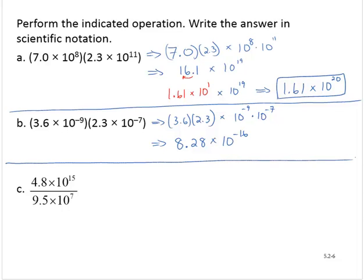In example C, we have 4.8 times 10 to the 15th divided by 9.5 times 10 to the 7th. So I can break that up into two fractions: 4.8 over 9.5 times 10 to the 15th over 10 to the 7th.